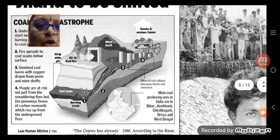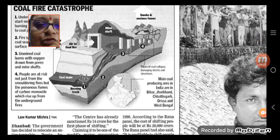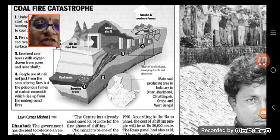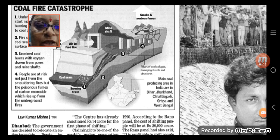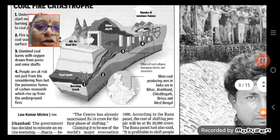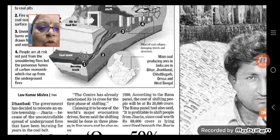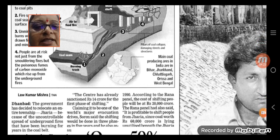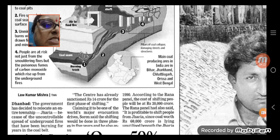The coal burns with oxygen down from the pores and underground shafts — coal is burning here. People are at very high risk, not only from smoldering fires but also from poisonous fumes. Carbon monoxide is present, which causes people to suffocate.